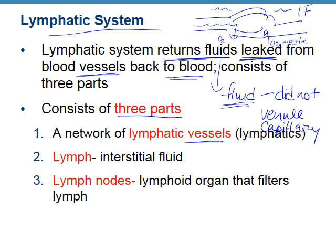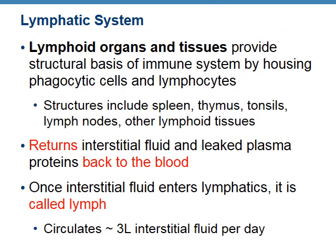Three parts: lymphatic vessels, lymph — which is the fluid once it enters the vessel — and then lymph nodes, which are going to filter that lymph fluid and clean it before we dump it back into your heart. Lymphoid organs and tissues are going to provide a structure or scaffolding for the immune cells to sit and wait.